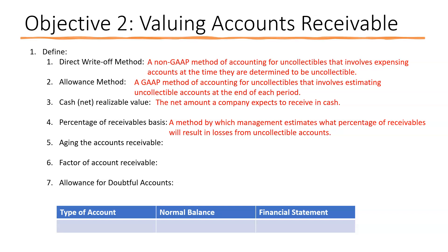Aging the accounts receivable is the analysis of receivable balances by the length of time they have been unpaid. Once the due date passes, balances are placed into buckets: 1–30 days, 31–60 days, 61–90 days, over 90 days, etc. Accounts just a day or two past due are less concerning than those two or three weeks past due.